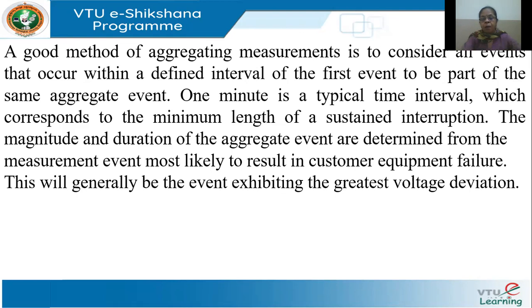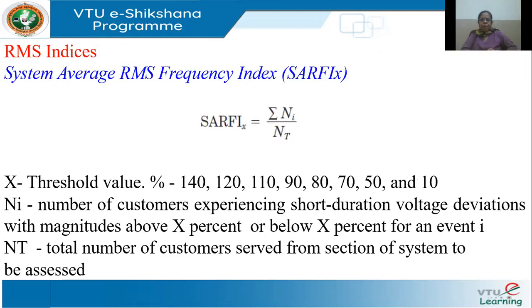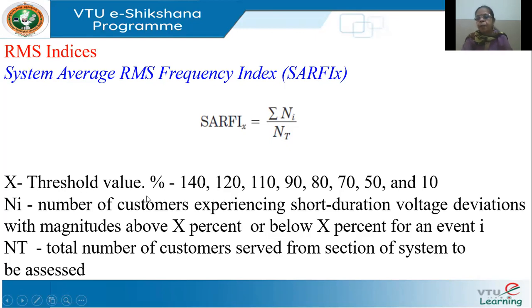A very popular RMS index is called the System Average RMS Frequency Index, or SARFIx — defined as sigma(Ni)/NT. X is the threshold value, and the standard threshold values defined are 140, 120, 110, 90, 80, 70, 50, and 10. Ni is the number of customers experiencing a short-duration voltage deviation with magnitude above x percent (for swells: above 110, 120, or 140) or below x percent (for sags: below 90, 80, 70, 50, or 10). NT is the total number of customers served.